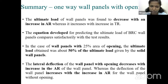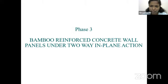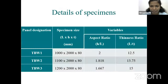Phase 3 covers strength and behavior of bamboo reinforced concrete wall panels in two-way in-plane action. For two-way wall panels, supports are provided on all four sides. The wall panel size was reduced compared to Phase 1 because two-way panels have higher load-carrying capacity due to four-sided support, and our testing frame had a capacity of only 100 tons.